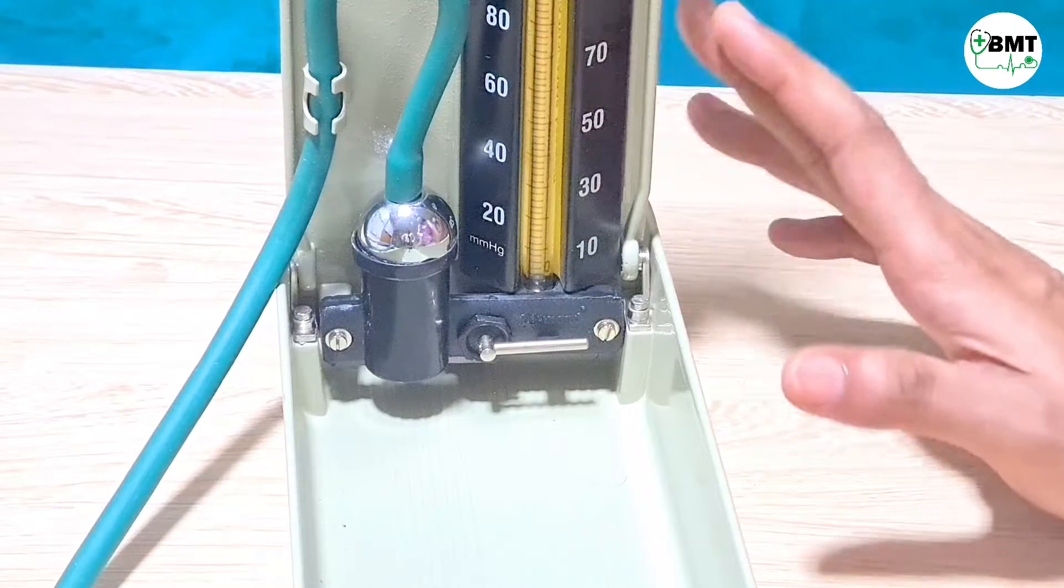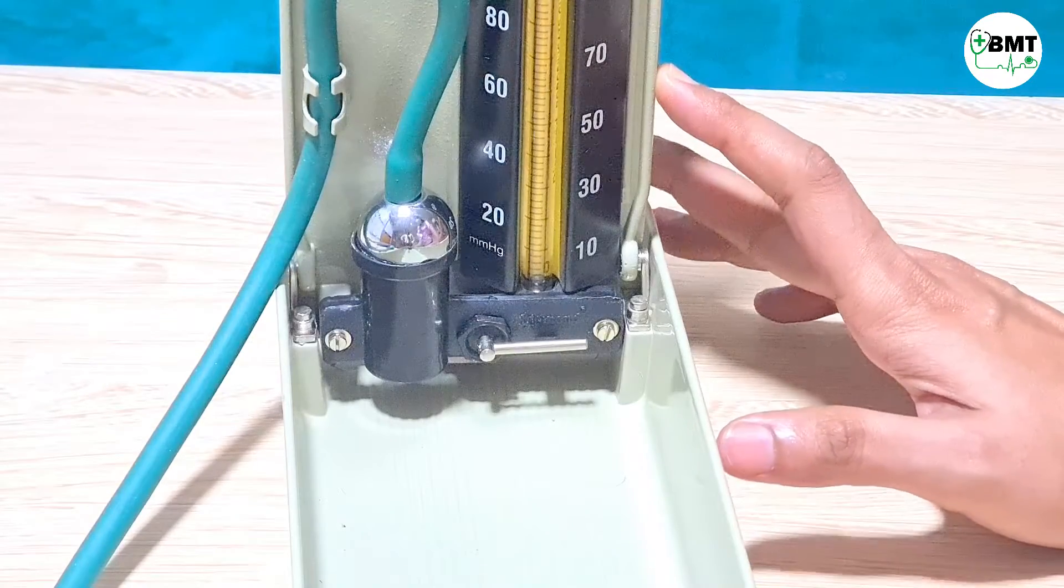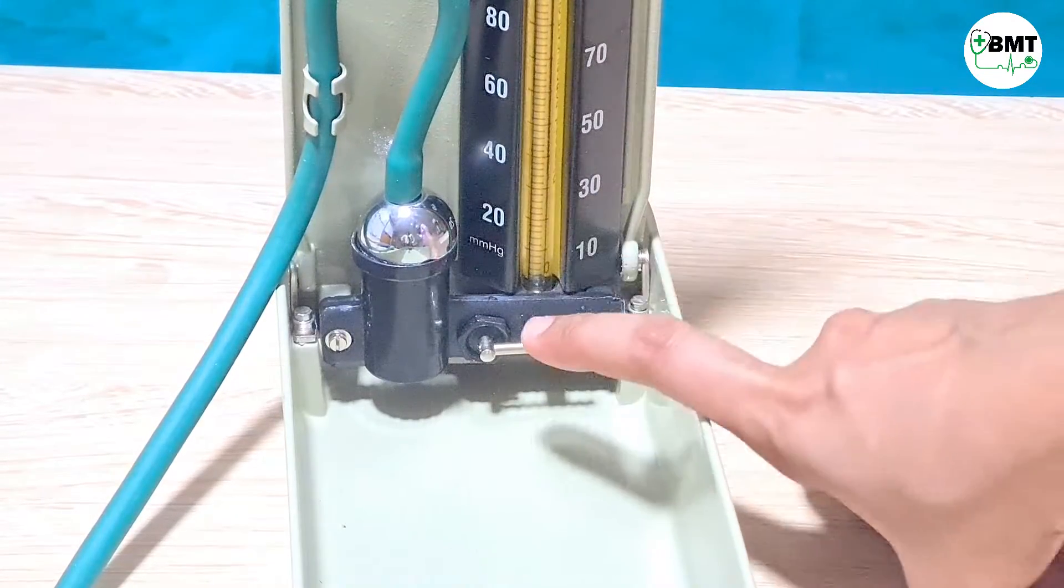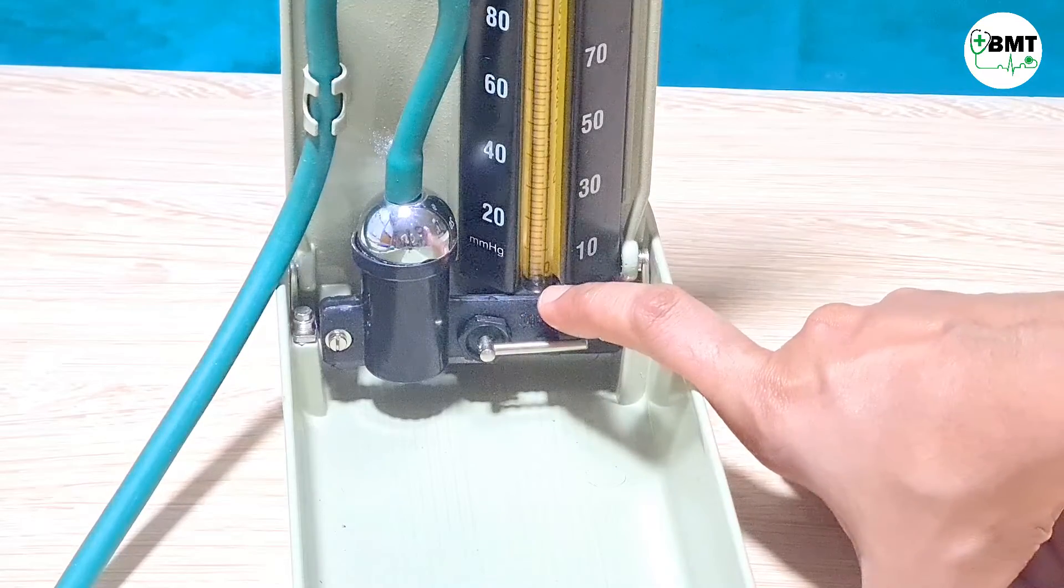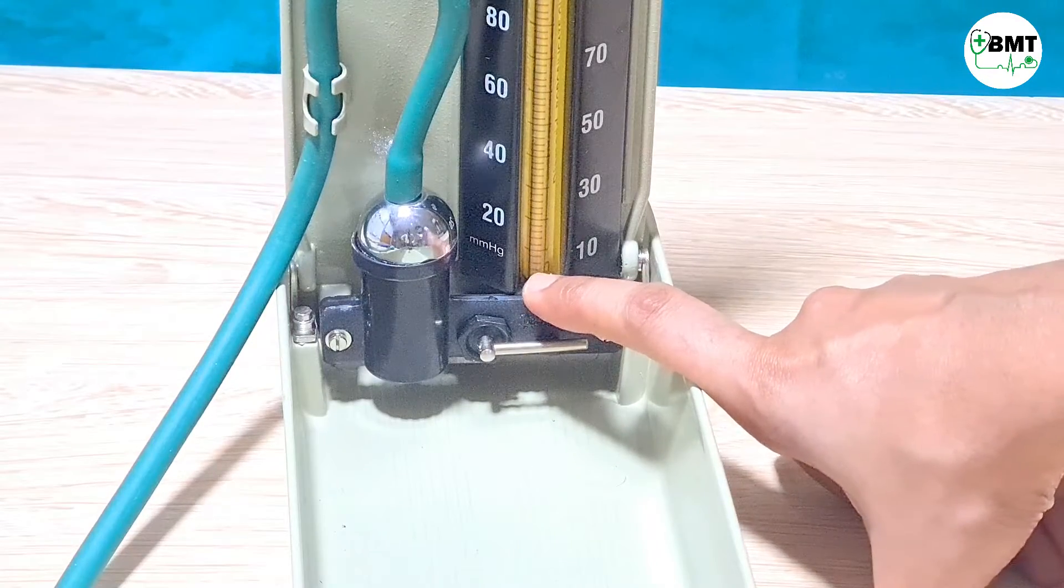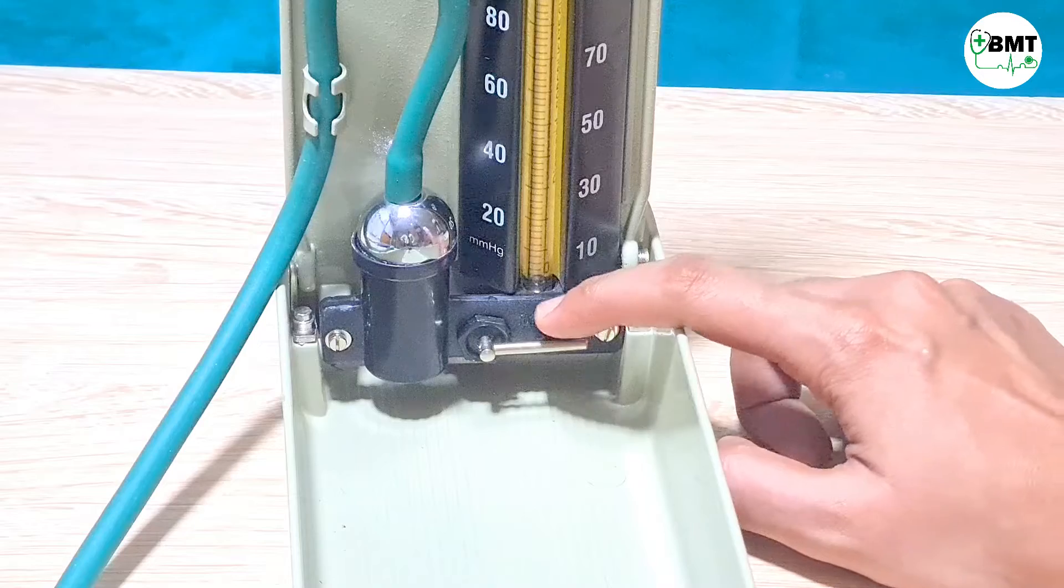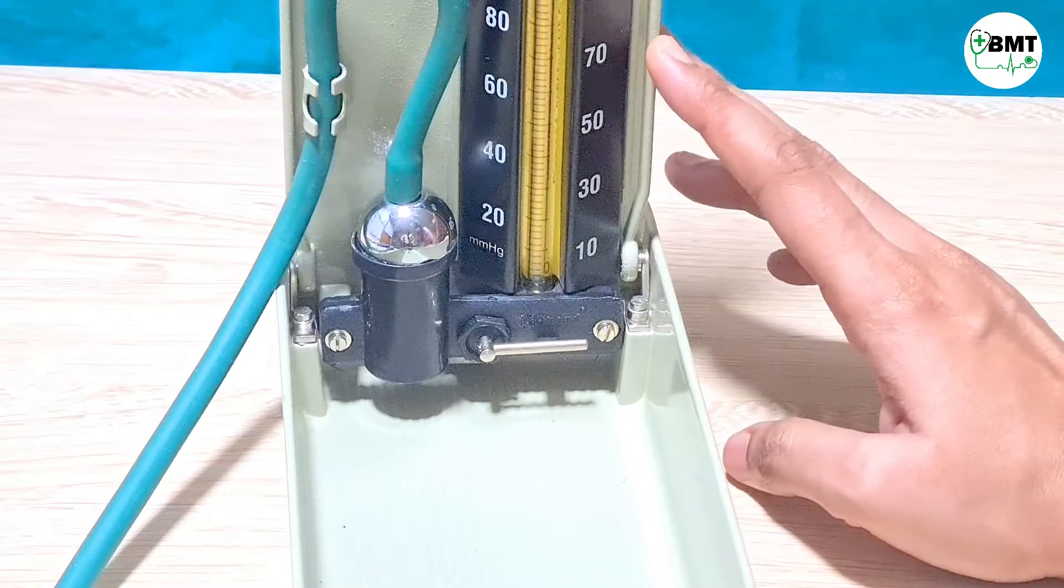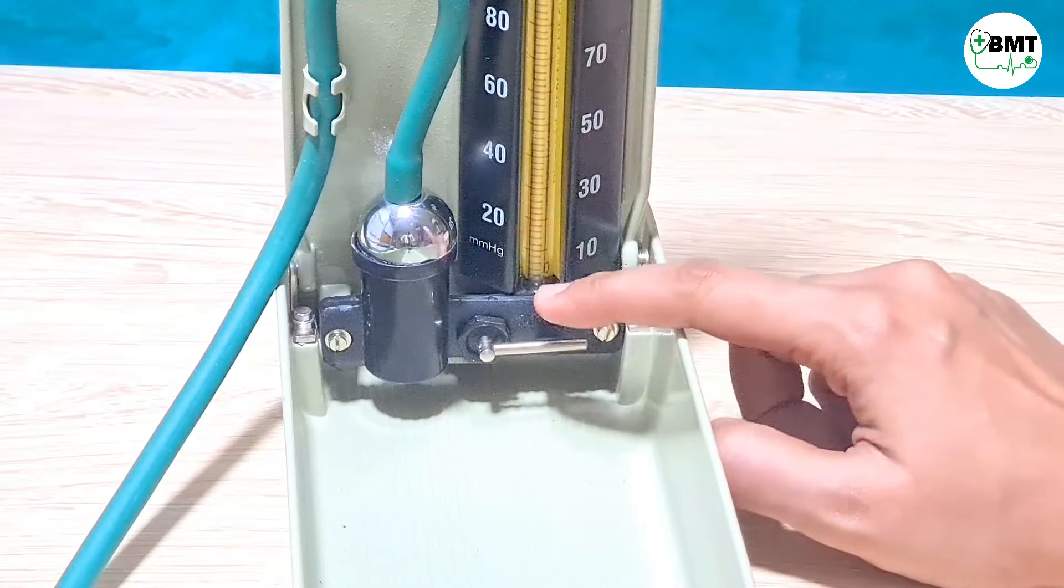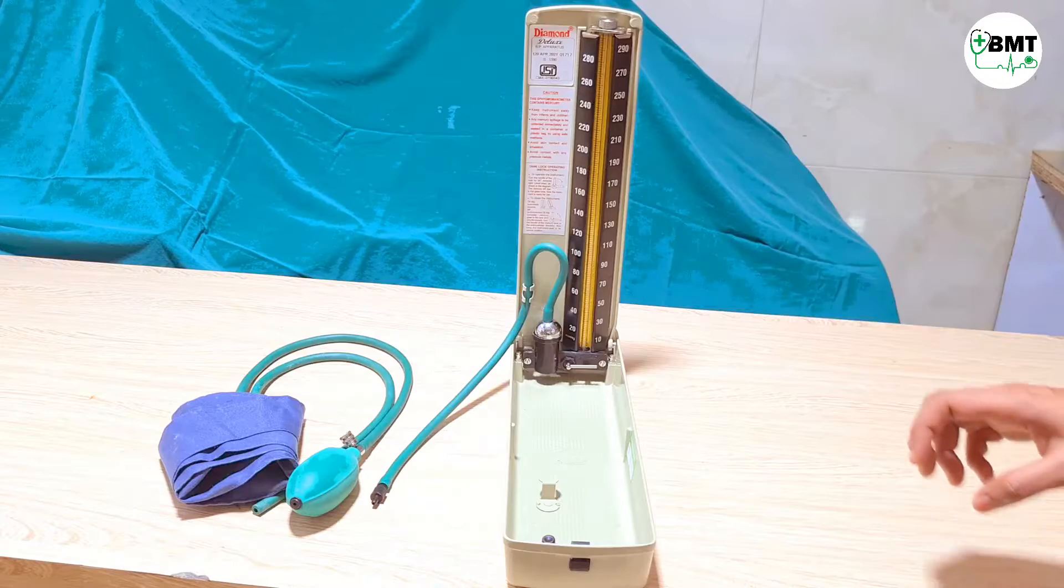Now how will we know whether this BP apparatus is calibrated or not? You can see mercury over here. It should be on this zero point. Currently you can see this is not on zero, which means this is not calibrated. So for that we have to fill mercury till zero.